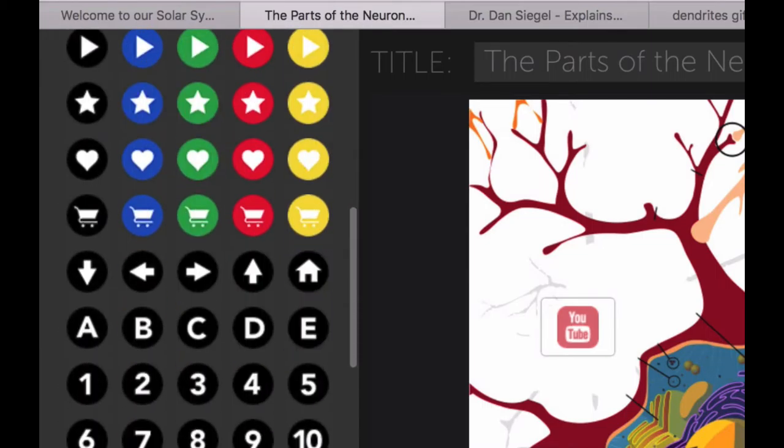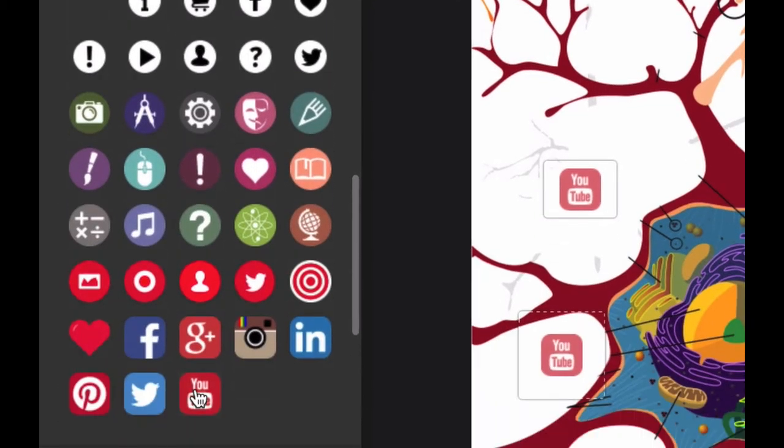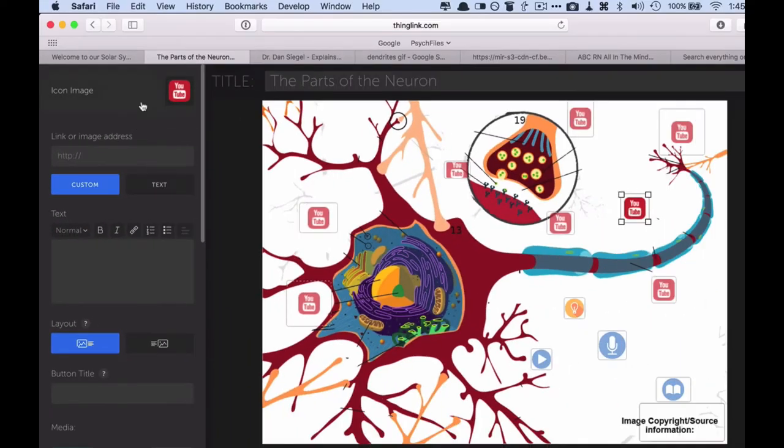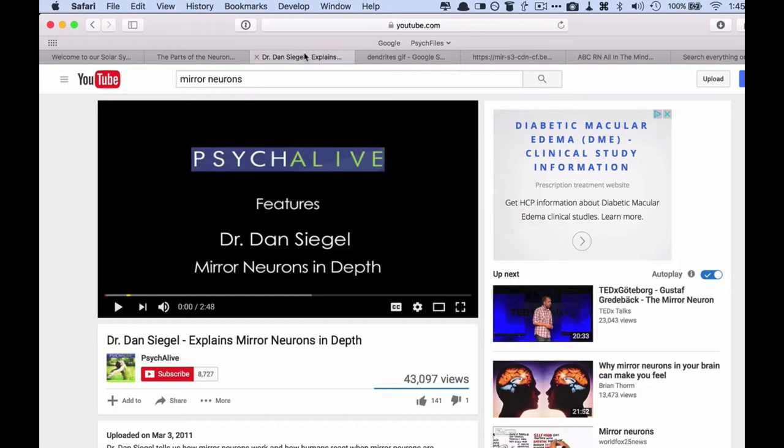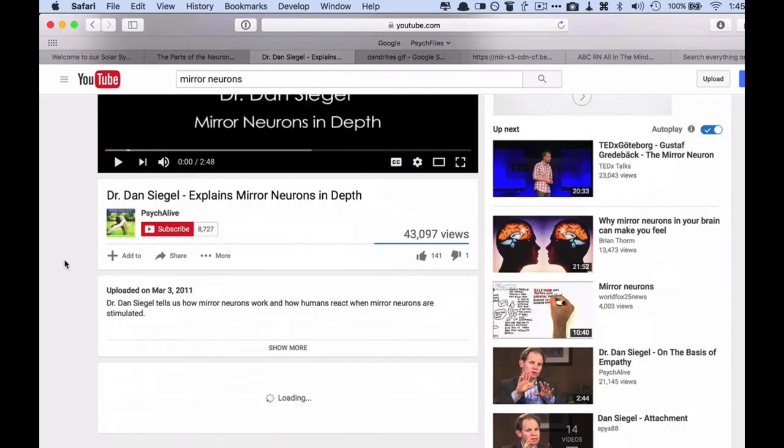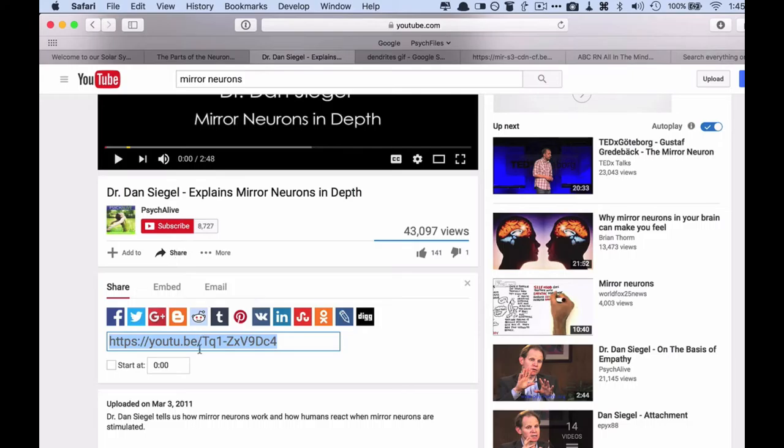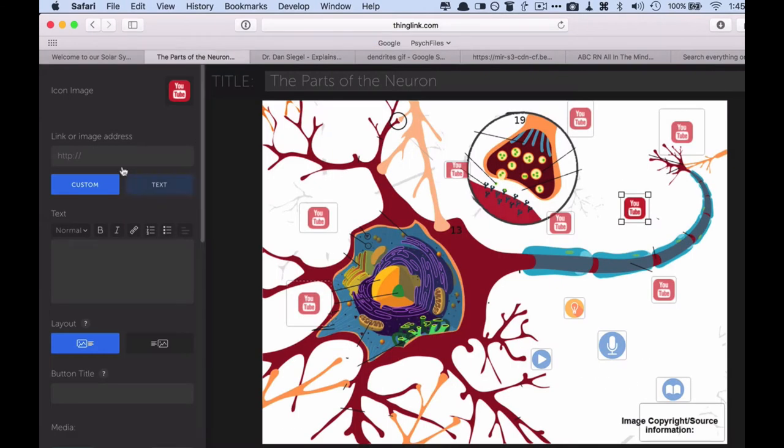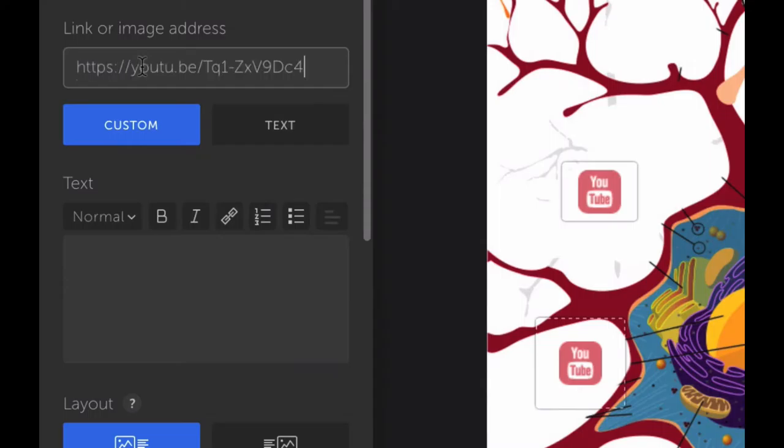So suppose I wanted to put in a YouTube video. They have lots of icons already in place. And so you would go, and here's a YouTube video that I like. I'll just grab the link to it, copy it, and come over, and paste it in there.